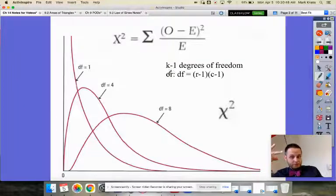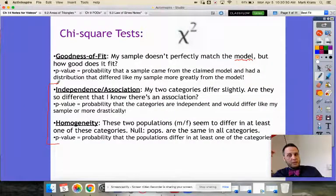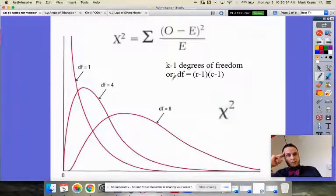If you have a two-way table, which is what we see for both of these are comparing two-way tables, you'll find that the degrees of freedom are the rows minus one times the columns minus one.